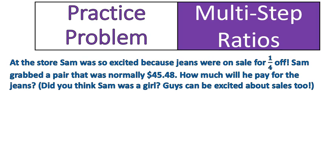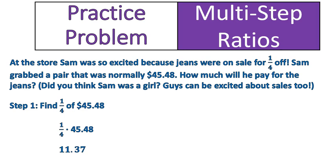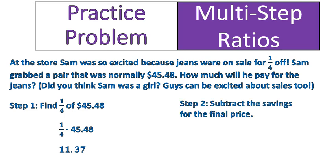Welcome back. This is the full solution. Step number one, I'm going to find one-fourth of $45.48 — in other words, one-fourth times $45.48 — which gives me $11.37. Then we move on to step two. Because it was a sale price, we're going to subtract the amount that we saved from the original price to give us the final price: $45.48 minus $11.37 leaves us with $34.11. That's what Sam's going to pay for his jeans.